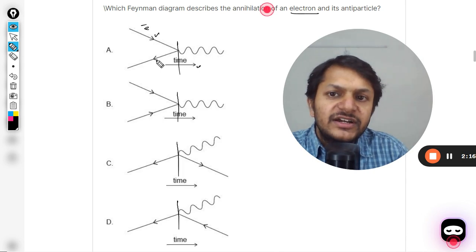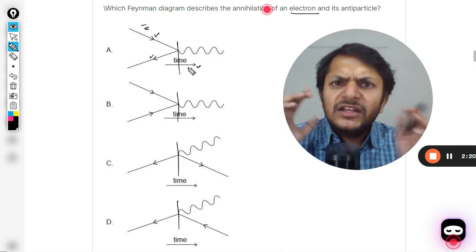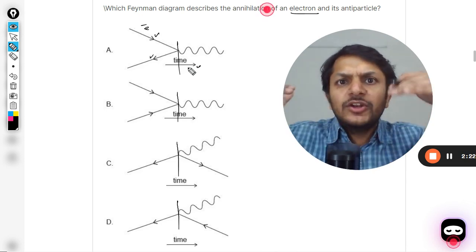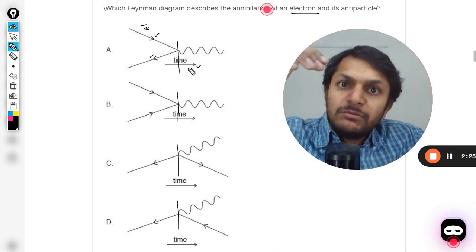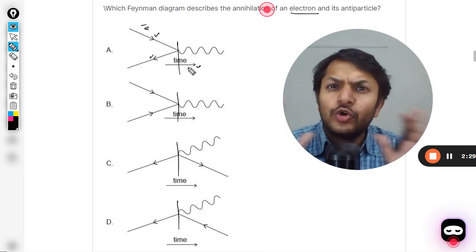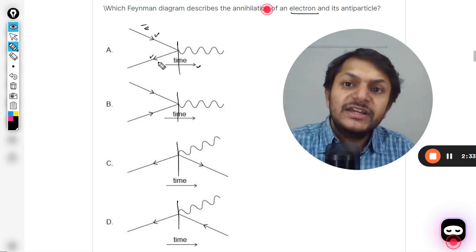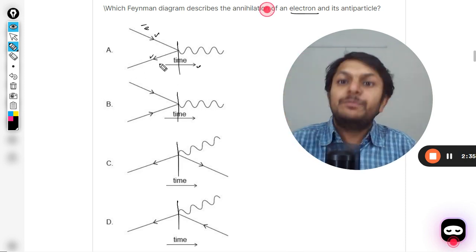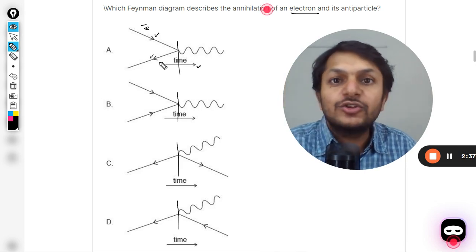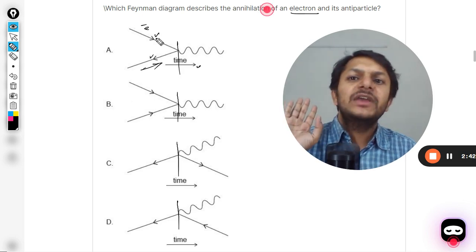And this direction clearly, this direction is pointing opposite to the time. It does not mean that the particle is going into the opposite direction, into some negative time zones or something. Nothing hypothetical is happening. No Avengers, don't run your mind into those things. The only thing is that this direction into the backward direction shows that we are talking about the antiparticle, nothing more than that.